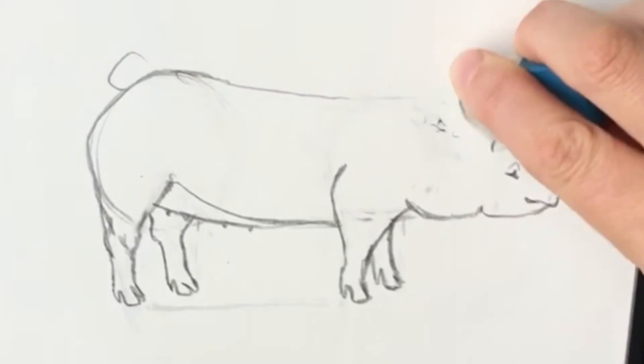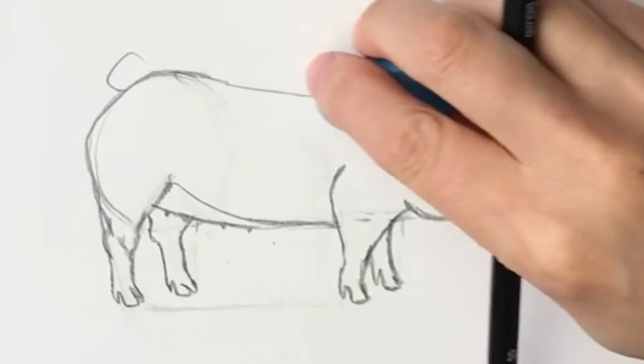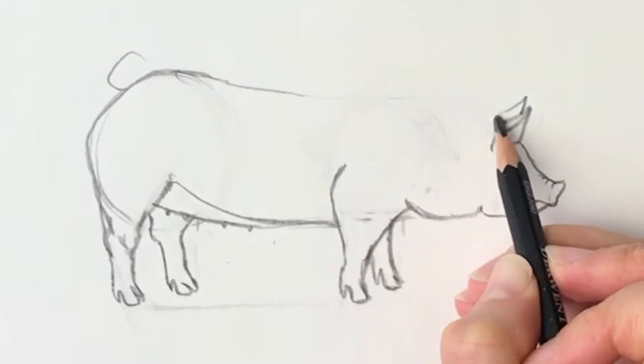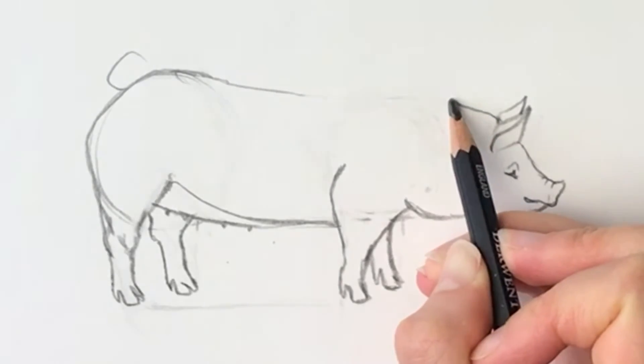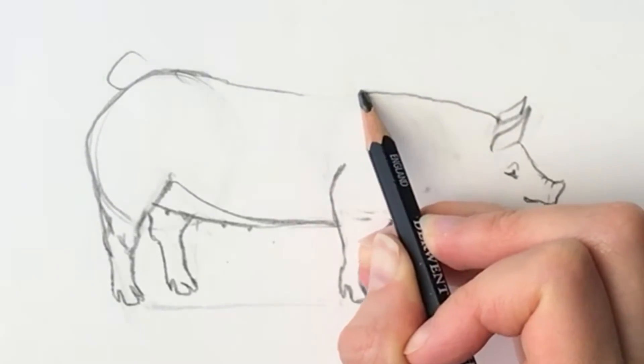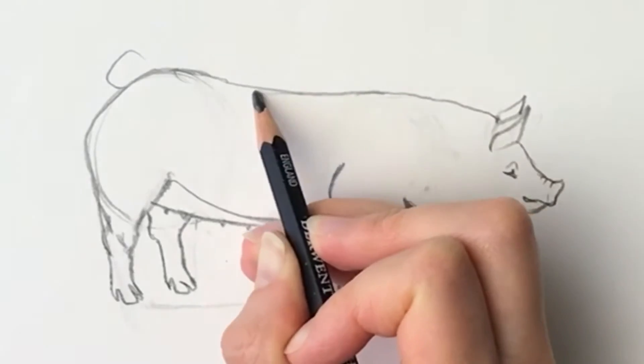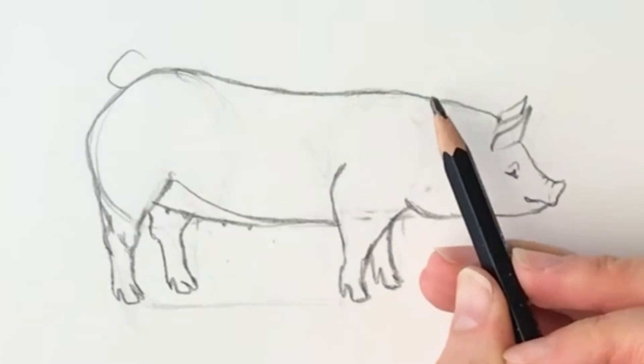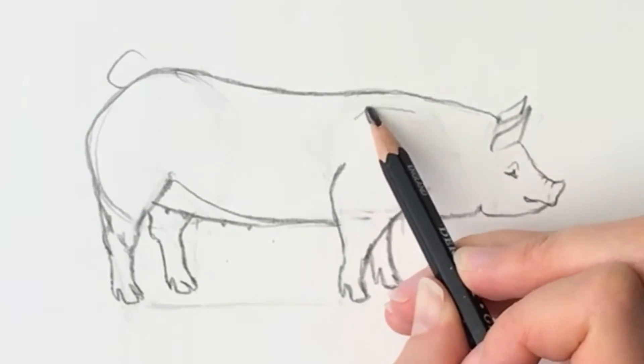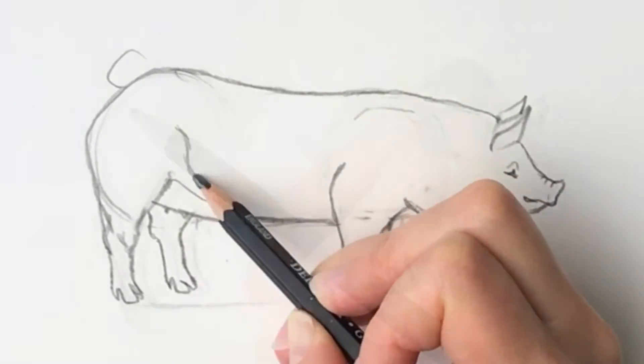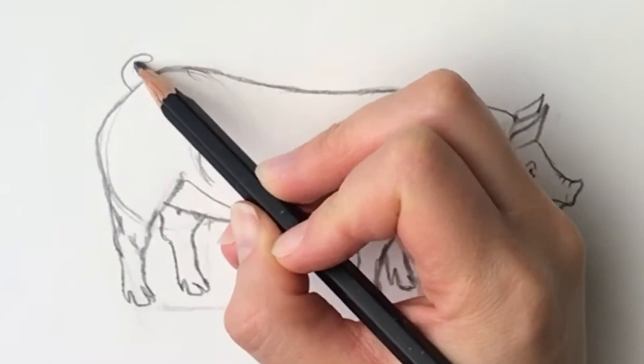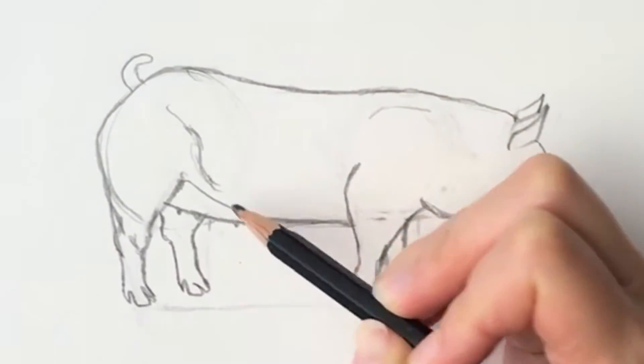So we've just got the back to do. Make it look a little bit more realistic. Bring it up and round. Up. And round like that. I'm just going to do some shadow. So the tail comes up like this. And round. Now I'm going to go over this in black pen.